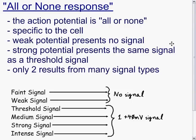This is a review video for Biology 12: the all-or-none response of a neuron. The action potential for a neuron is often characterized as all or none when it receives a signal from another neuron.